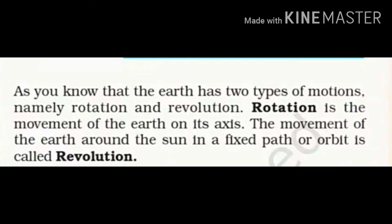Revolution is the movement of the earth around the sun in a fixed path or orbit — it is called revolution. Revolution means when the earth moves around the sun in a fixed path or orbit. These are the two motions of the earth: rotation and revolution.